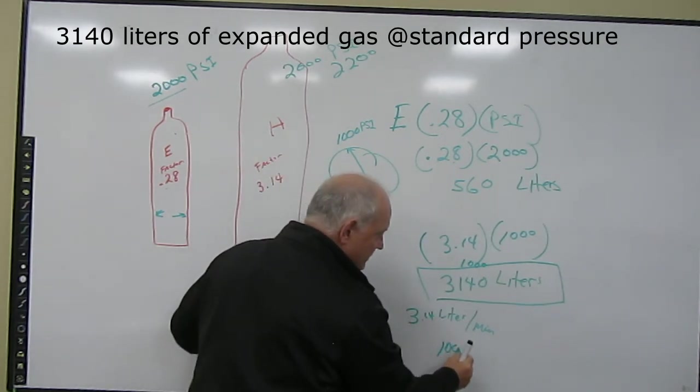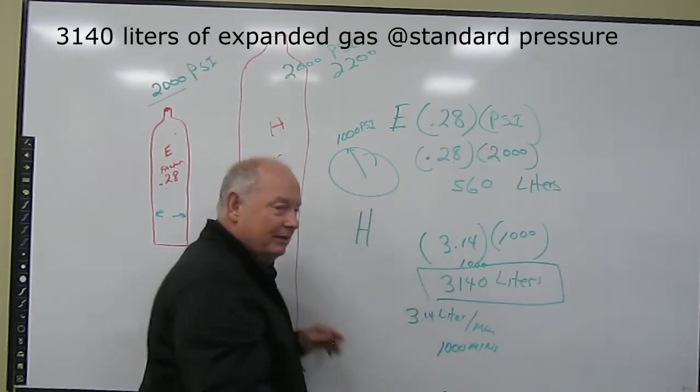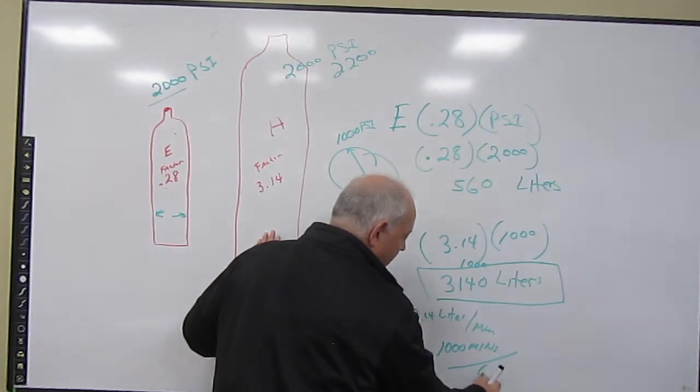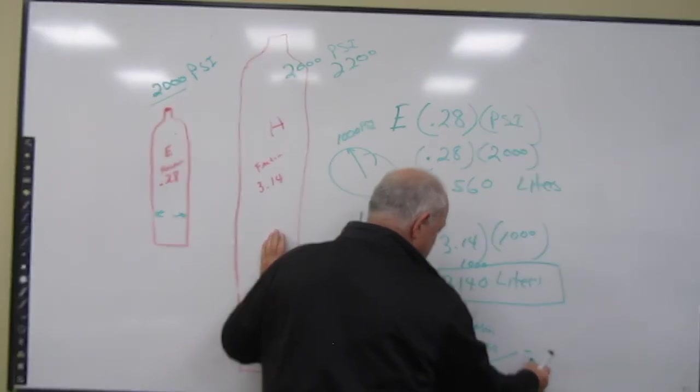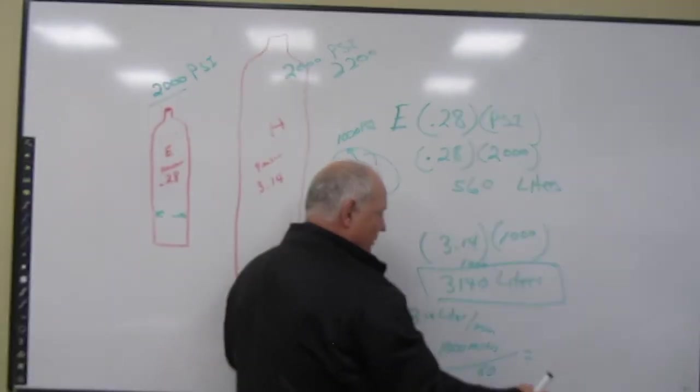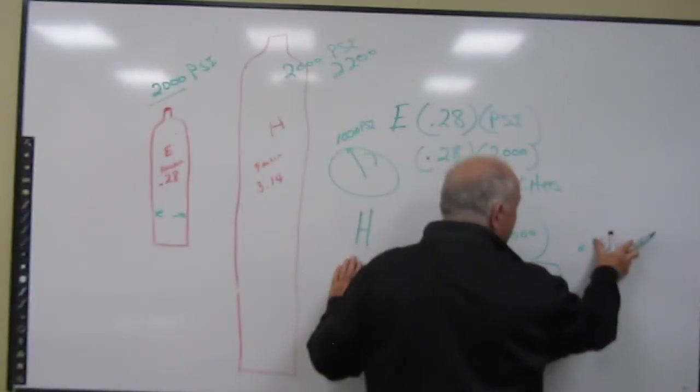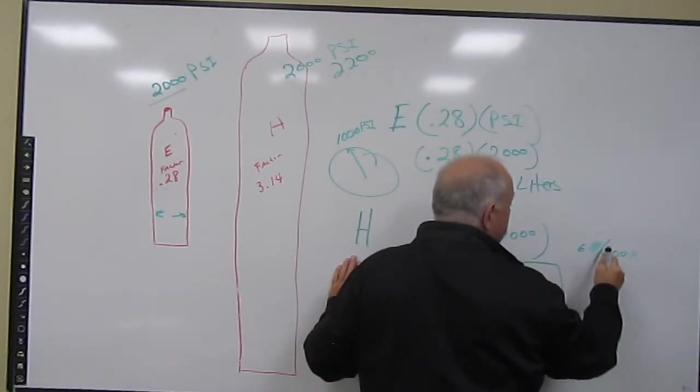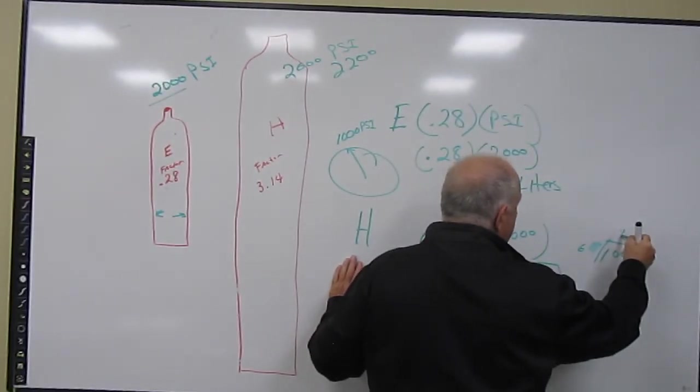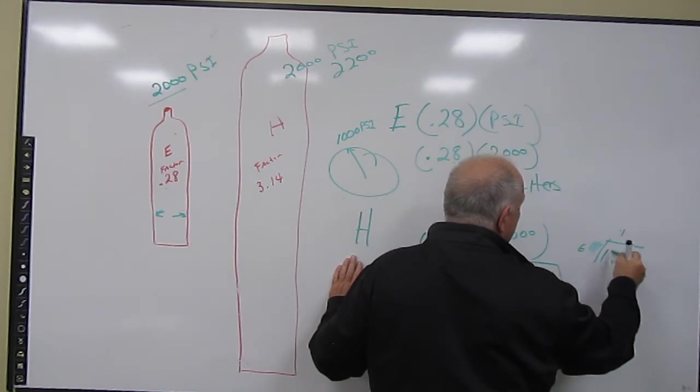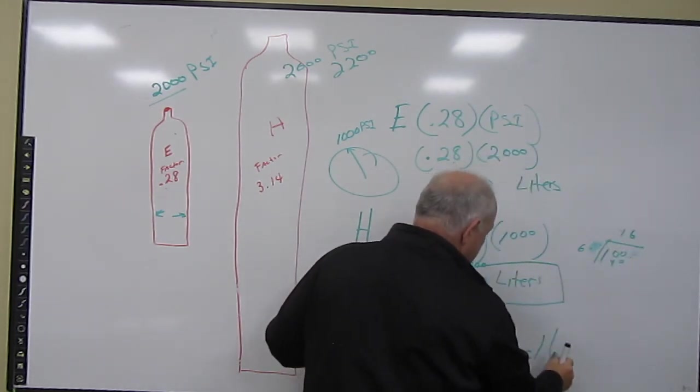1,000 minutes. How many hours is that? Divide that by 60 and you're going to get a large number. 1,000 divided by 60 is the same as 100 divided by 6. It goes into there one time with 40 left over. 6 times 8, 6 times 7, 6 times 6, 16.